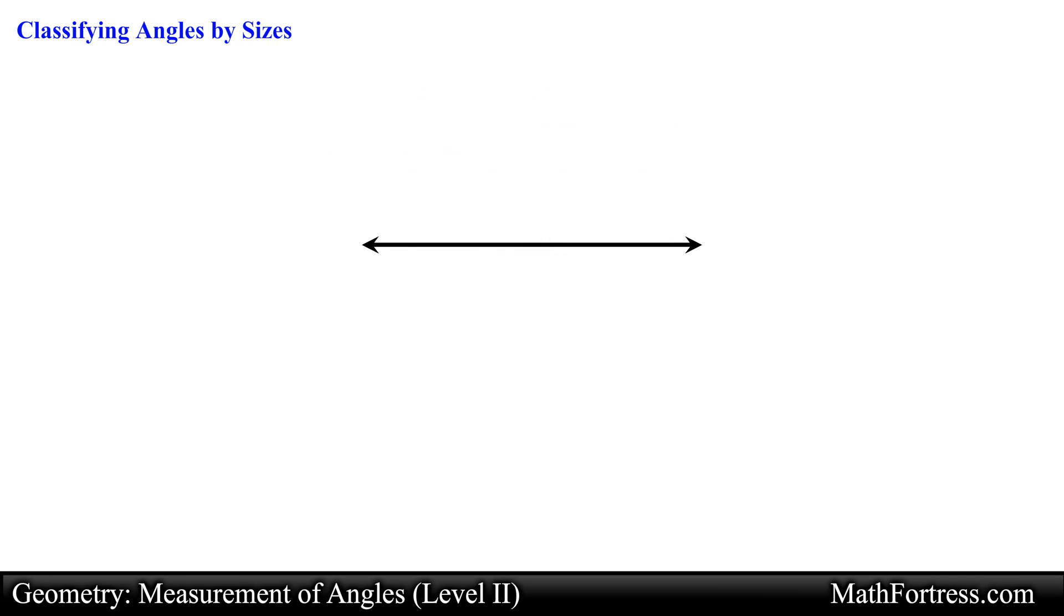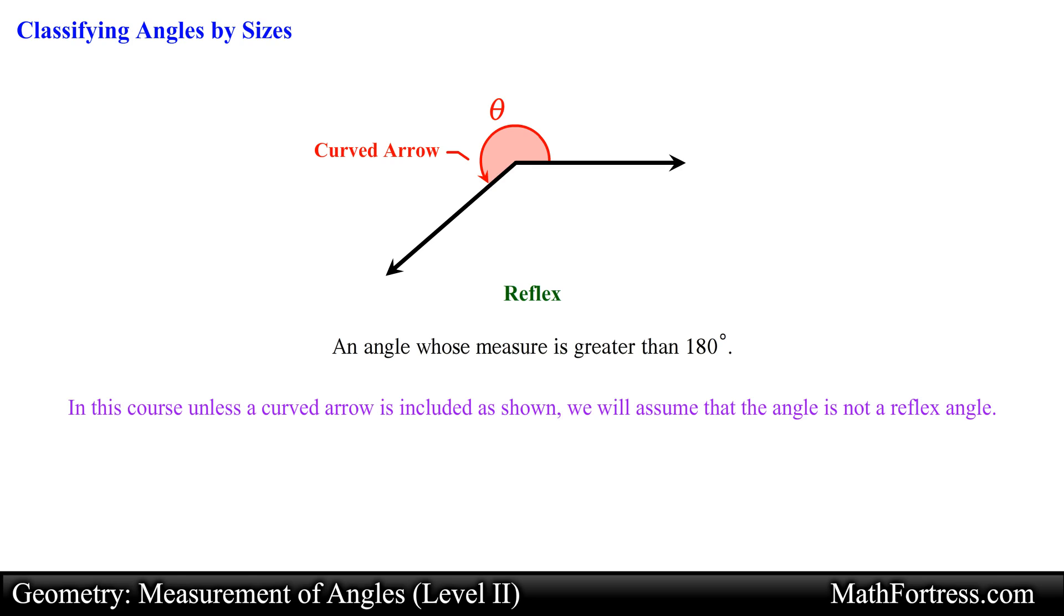The last two angles are rarely used in geometry, but we will go over them so that you can be acquainted with them. A reflex angle is an angle whose measure is greater than 180 degrees. This angle is denoted by a curved arrow that starts on one side and rotates to the other side of the angle. In this course, unless a curved arrow is included as shown, we will assume that the angle is not a reflex angle.